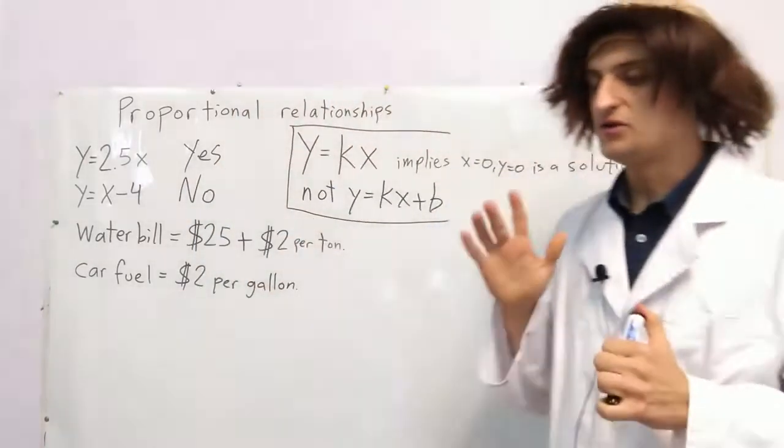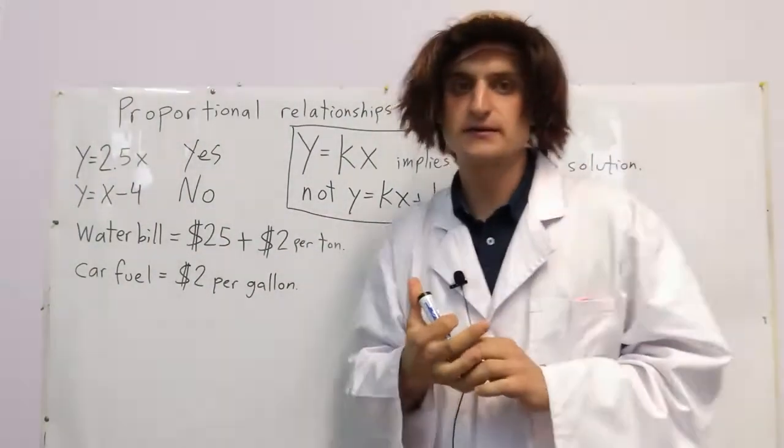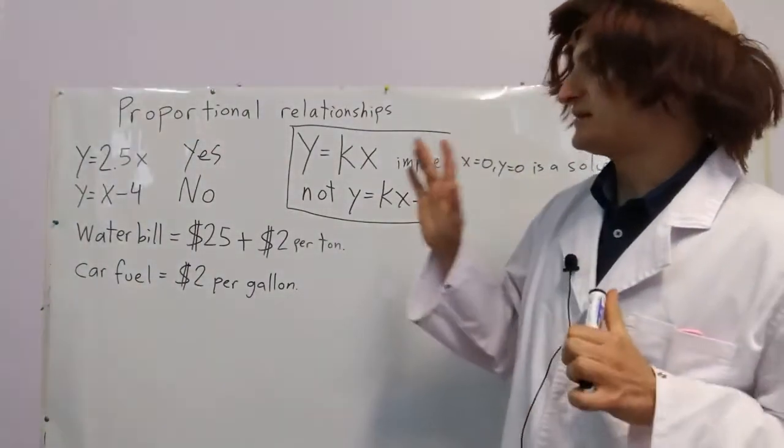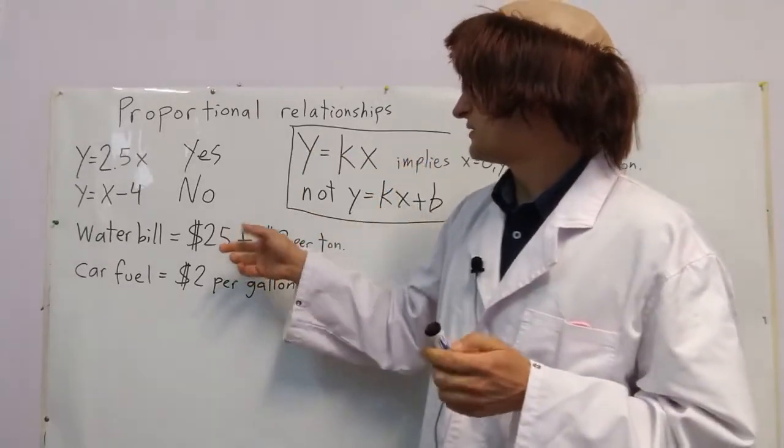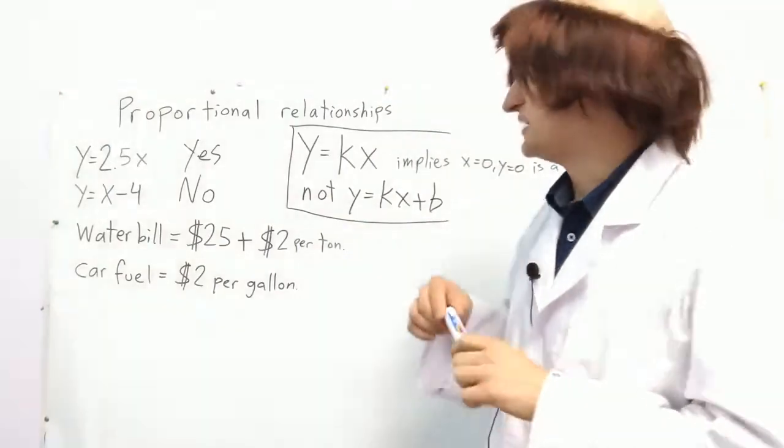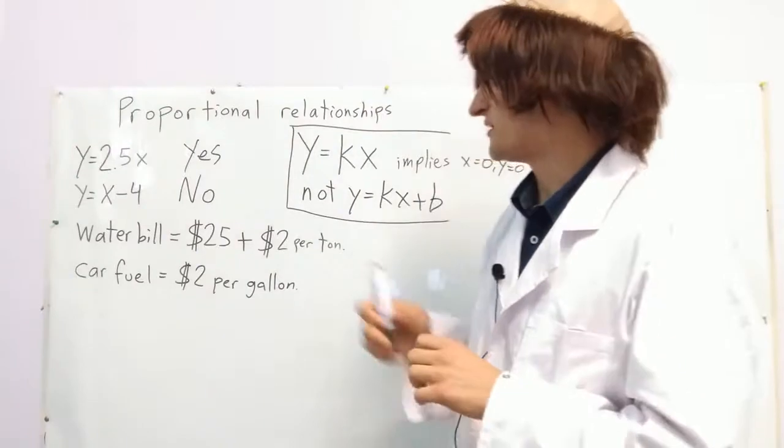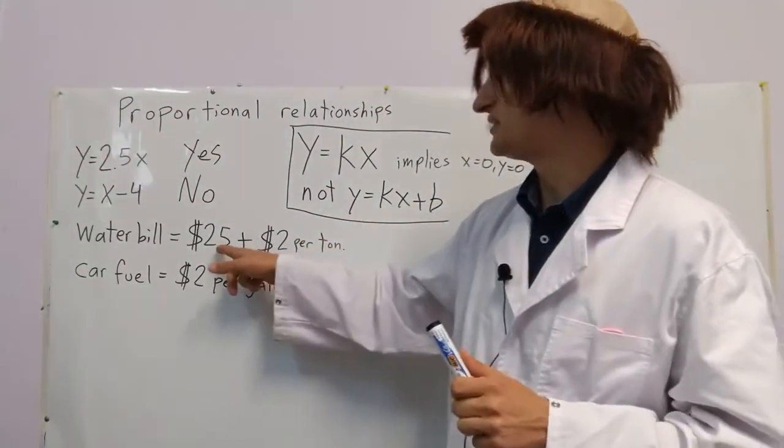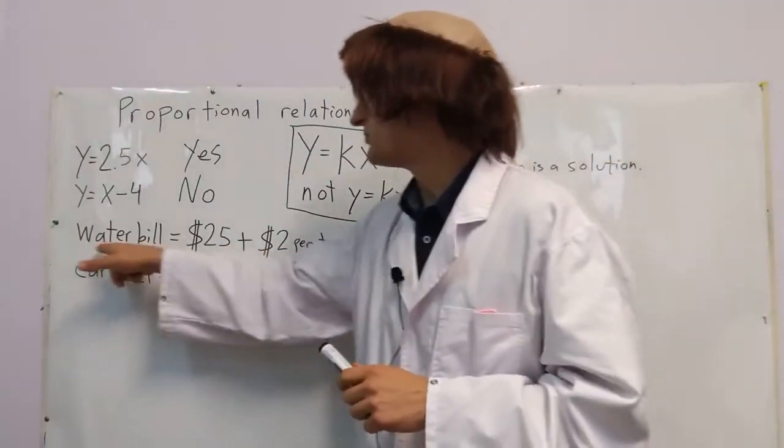Now, in the world around you, there's lots of things that are proportional, and some that are not necessarily proportional, even though you might assume they are. Let's take a water bill, for example. The way a water bill works, you'll have to pay $25 every month, whether or not you use any water, and then plus $2 per ton of water that you use. So, if you don't use any water one month, you'd still have to pay $25. This is not proportional.